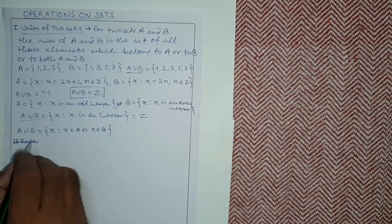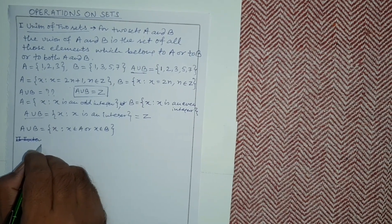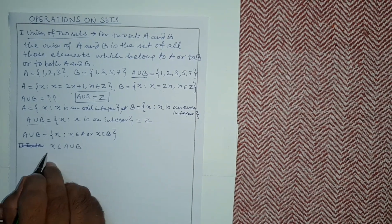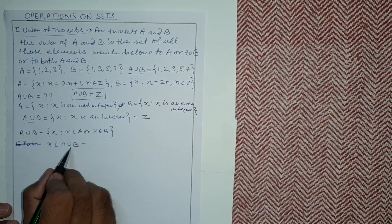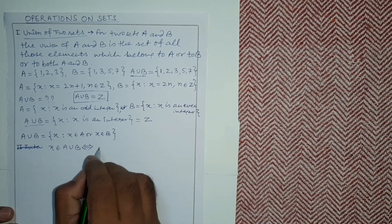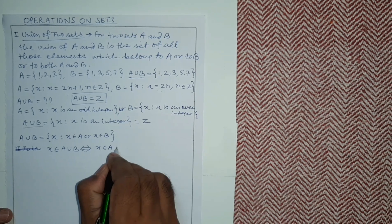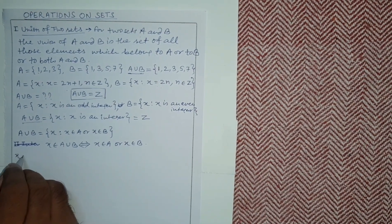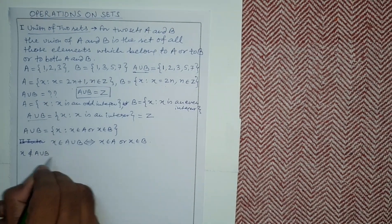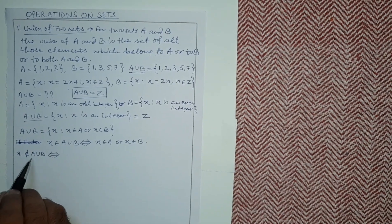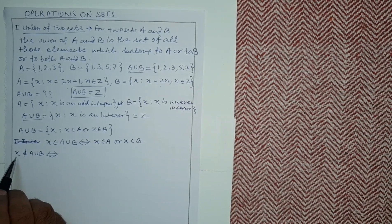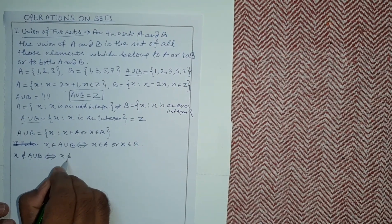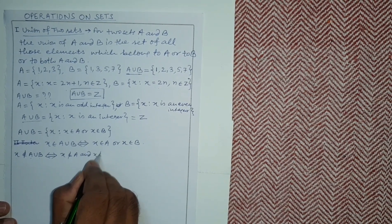Before moving to intersection, let us note some results related to union. First: x belongs to A union B if and only if x belongs to A or x belongs to B. Second: x does not belong to A union B if and only if x does not belong to A and x does not belong to B.